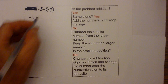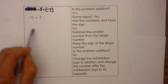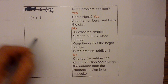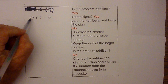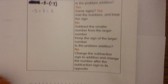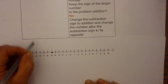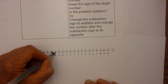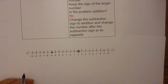Now ignore the original and use the rewritten problem. Is the problem addition? Yes. Same signs? No. Subtract the smaller number from the larger and keep the sign of the larger. Seven minus five equals two, and seven is larger than five, so the answer is positive two. On the number line: starting at negative five, I now have a positive number so I go to the right — one, two, three, four, five, six, seven — landing on positive two.